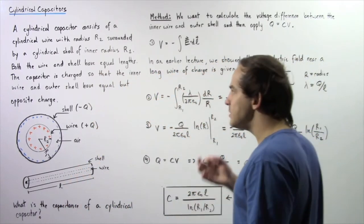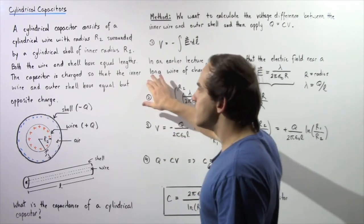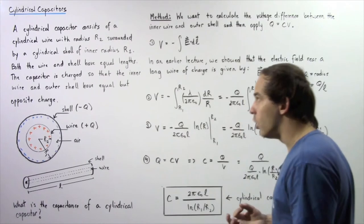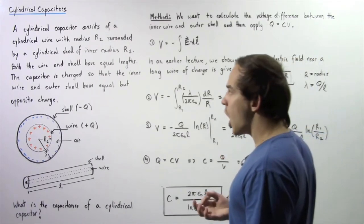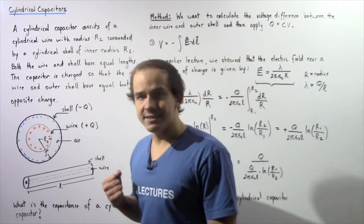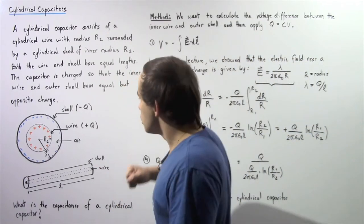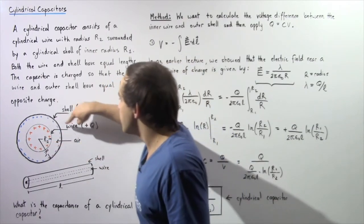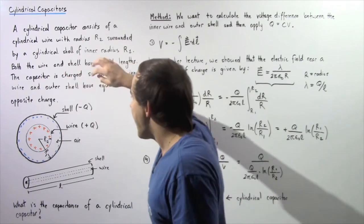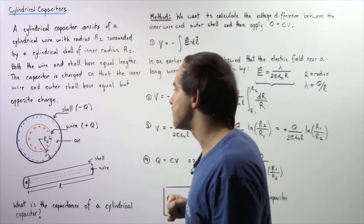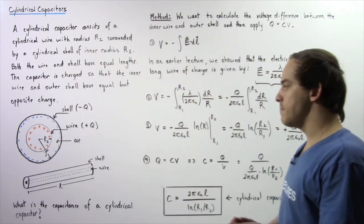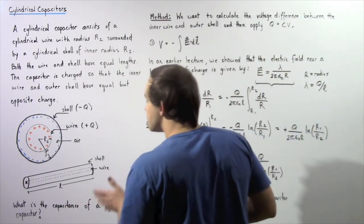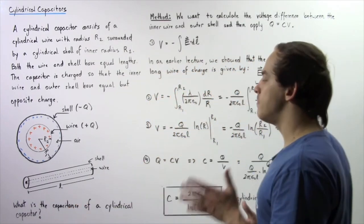The capacitor is charged in such a way that the inner wire and the outer shell have equal quantity of electric charge but are opposite in sign. So let's say this inner wire has a positive Q charge, then that means the outer shell has a negative Q charge. Knowing this information, we want to calculate what the capacitance is of such a cylindrical capacitor.